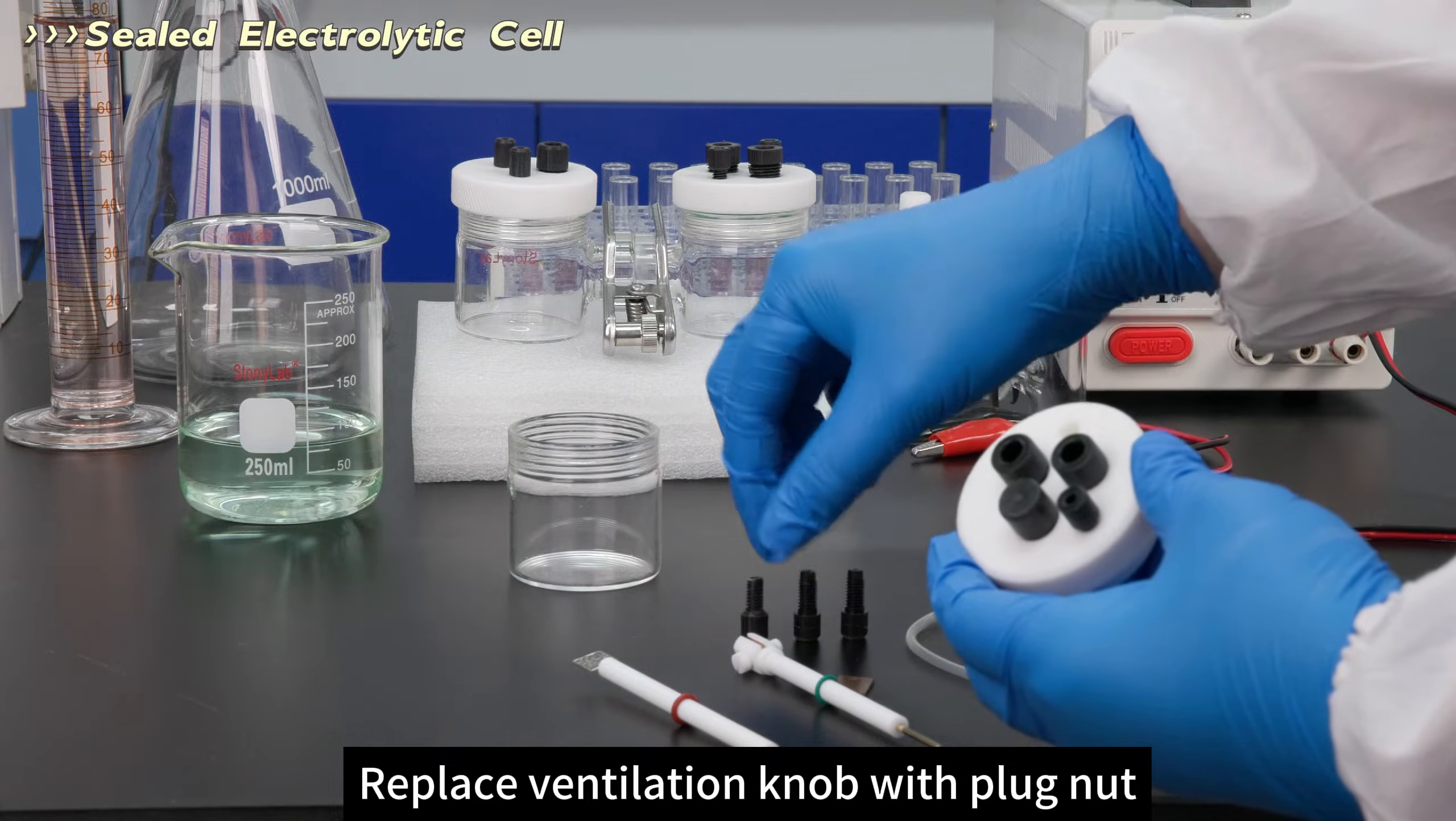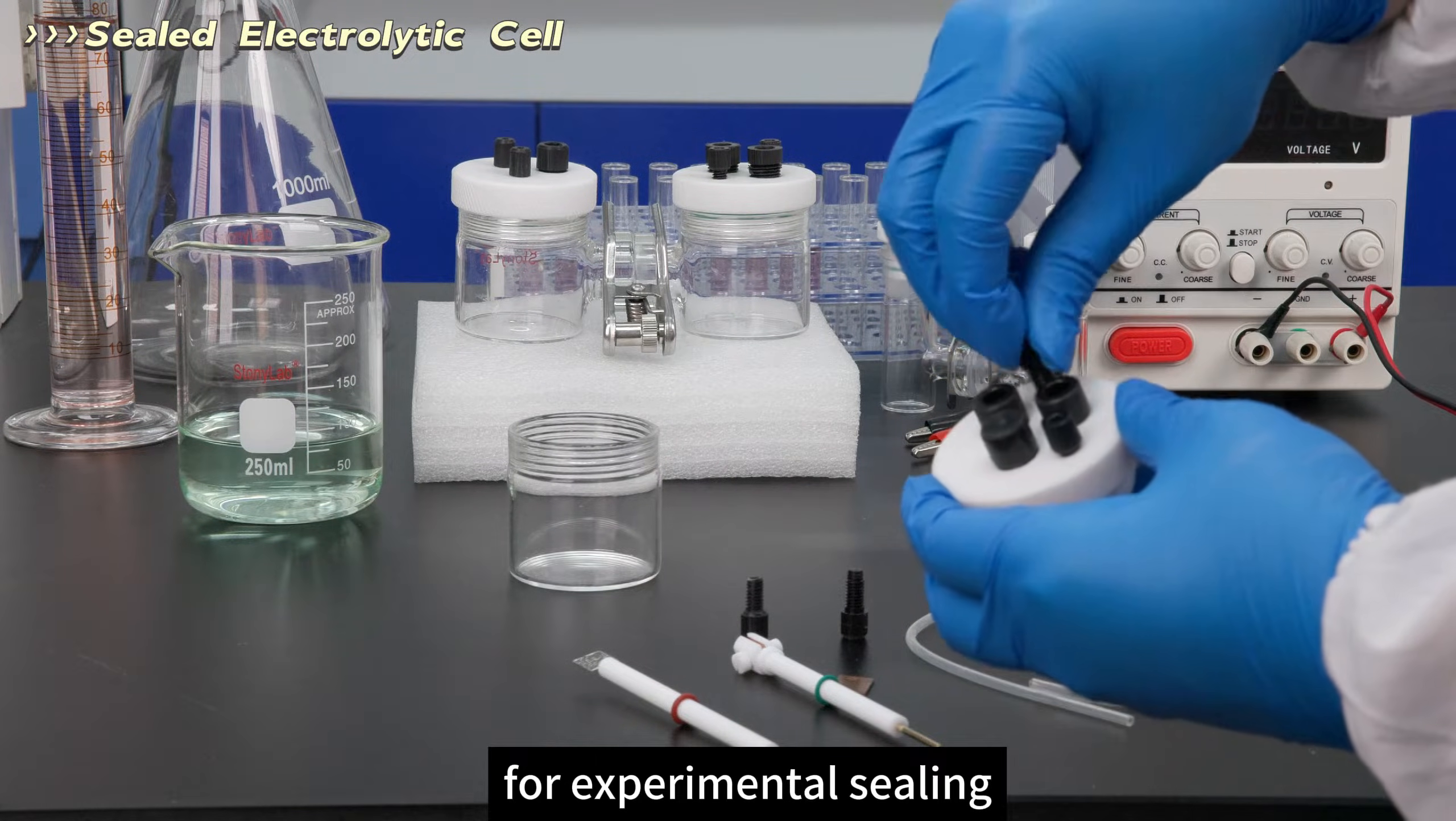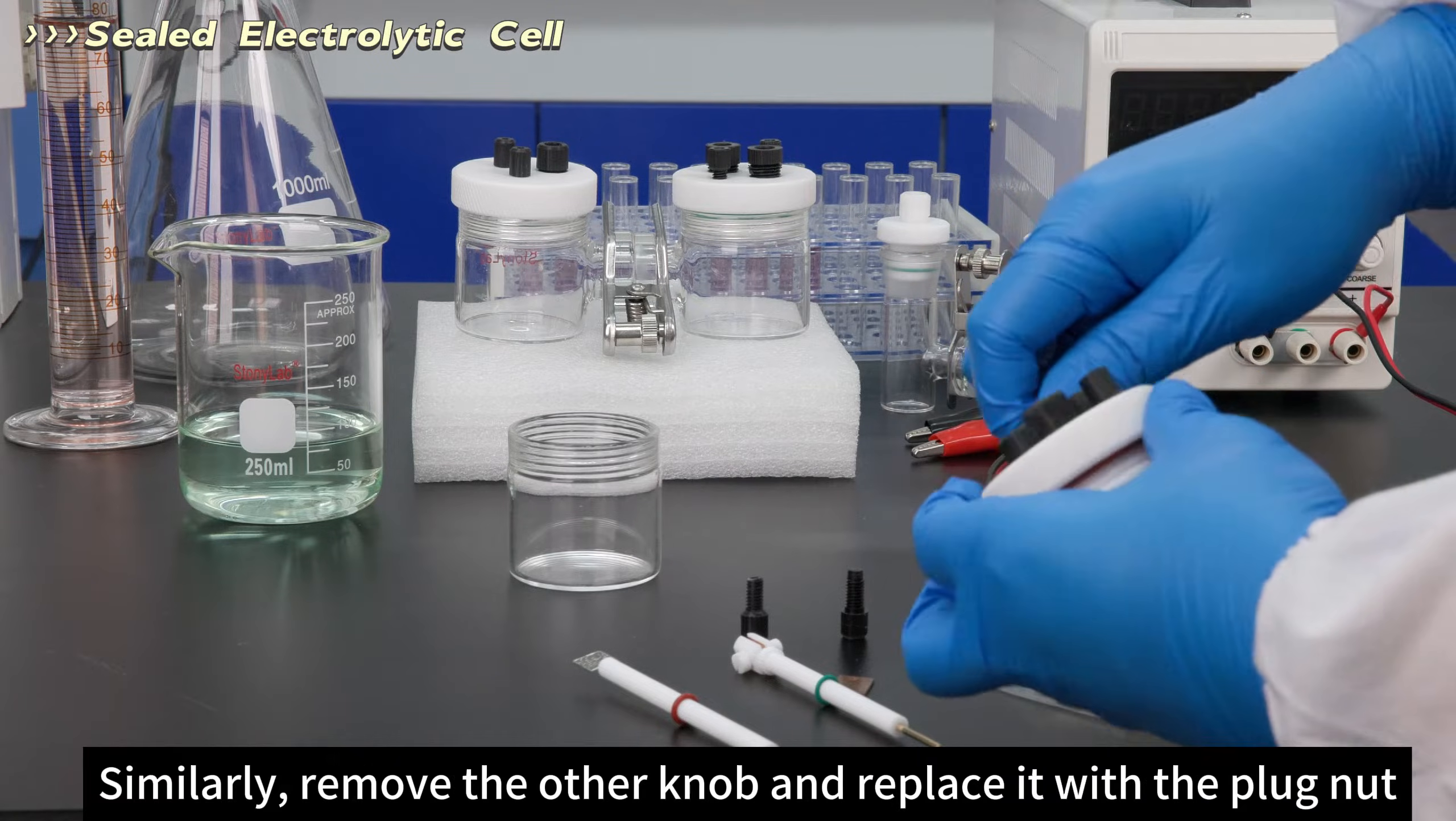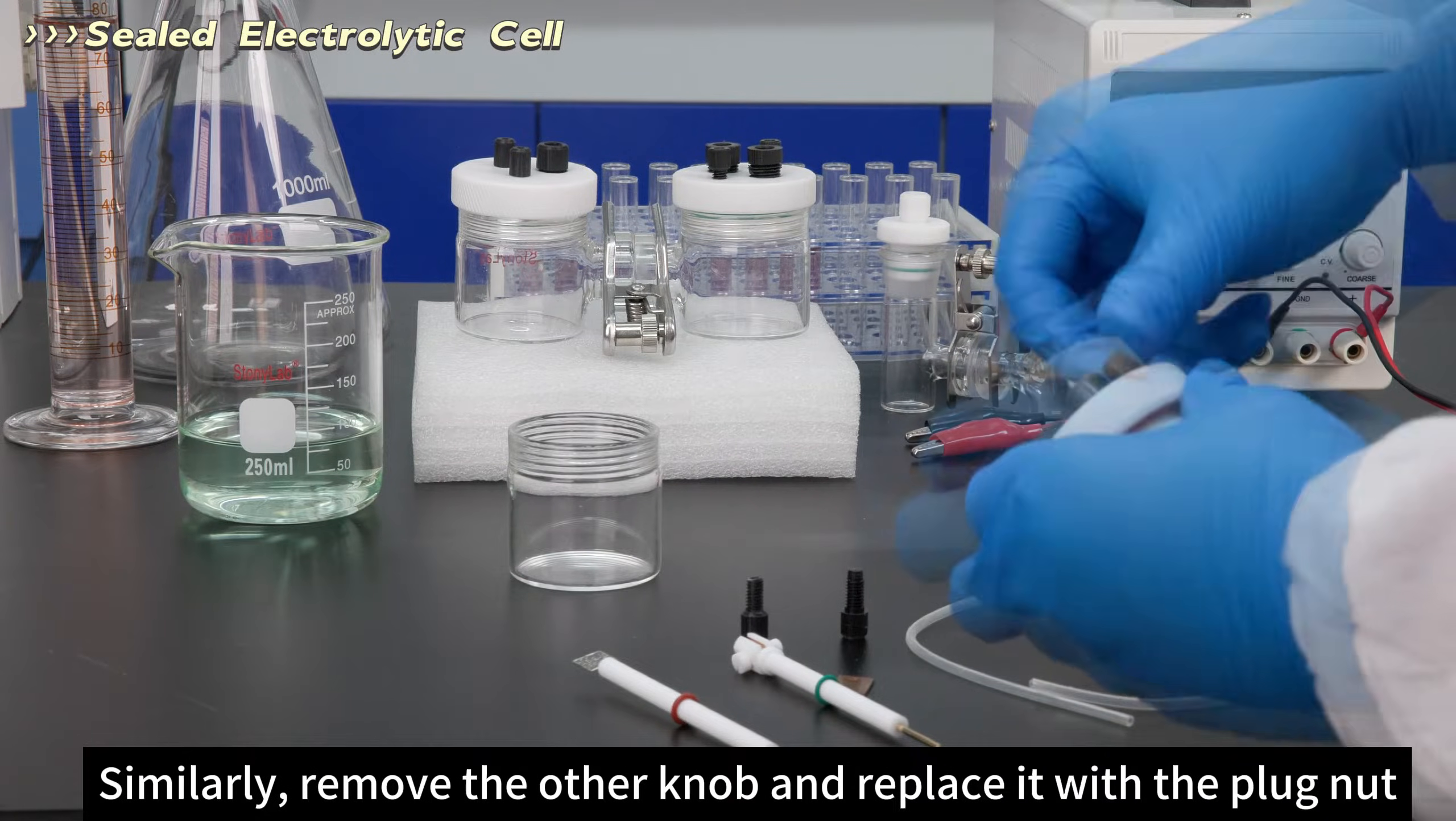Replace the ventilation knob with a plug nut for experimental sealing. Similarly, remove the other knob and replace it with the plug nut.